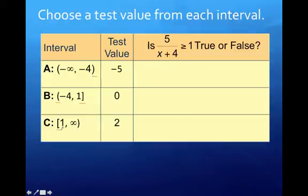So negative 4 gets parentheses. We know at this point infinities always get parentheses, and that leaves 1. Do I want parentheses or bracket with the 1? For the 1, what I'm going to do is look at my inequality. Since I have greater than or equal to, I can actually put a bracket around the 1. Had it been just a strict inequality, then I would have used parentheses.